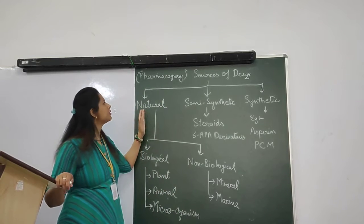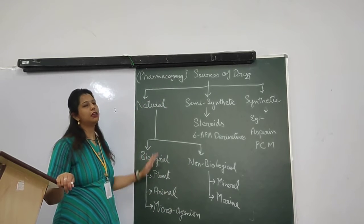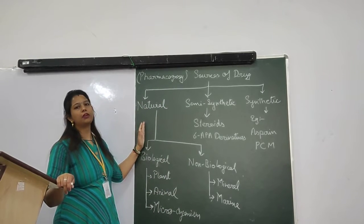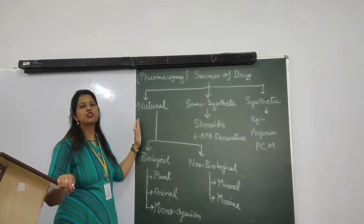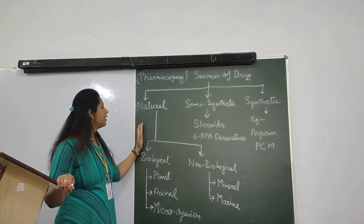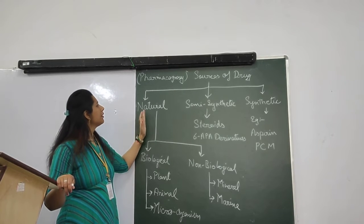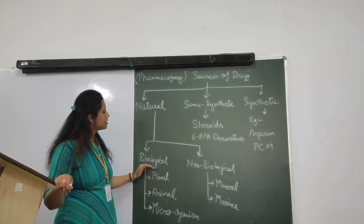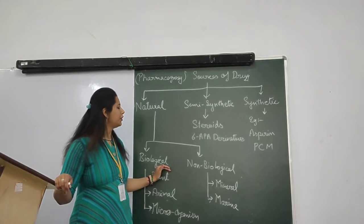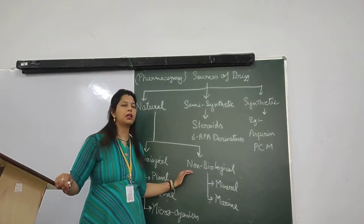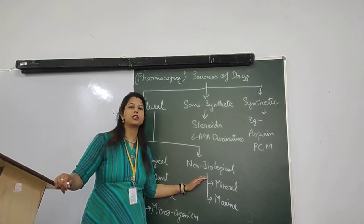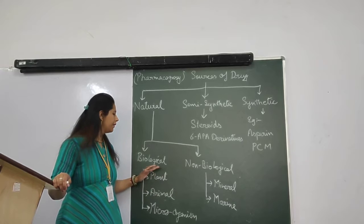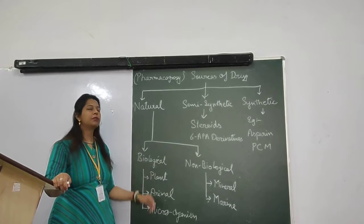Now we come to natural sources of drugs, which is the main part of this chapter. Natural sources of drugs are classified into biological and non-biological sources.